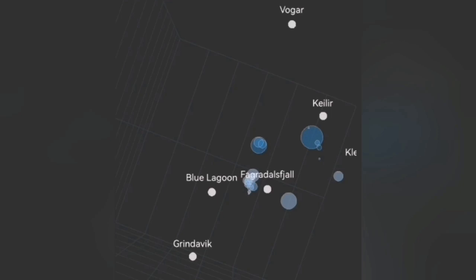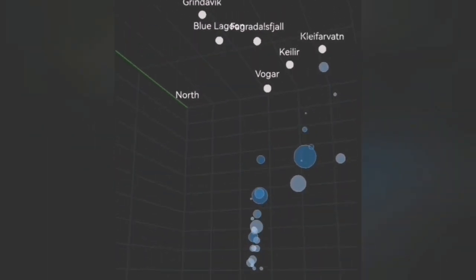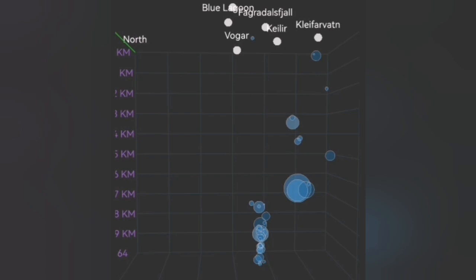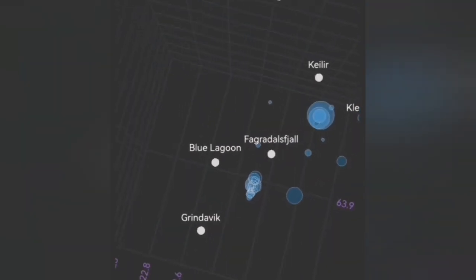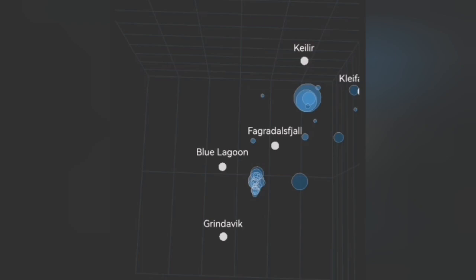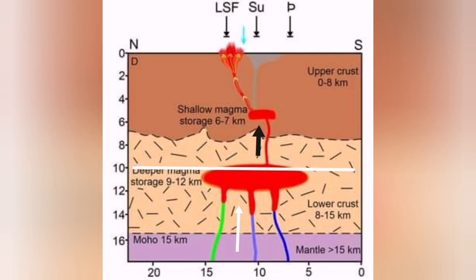We are seeing evidence for the rising of new material, new magma, in the form of tremors from that depth. In the depth model of the eruption from two consecutive days, we can see that something is rising. This could be magma.